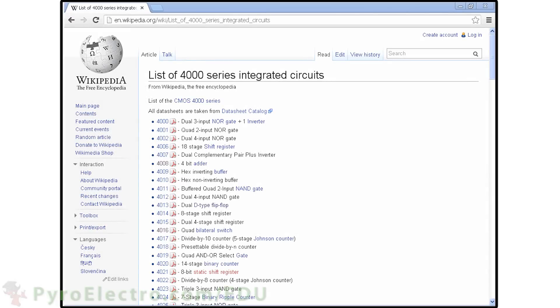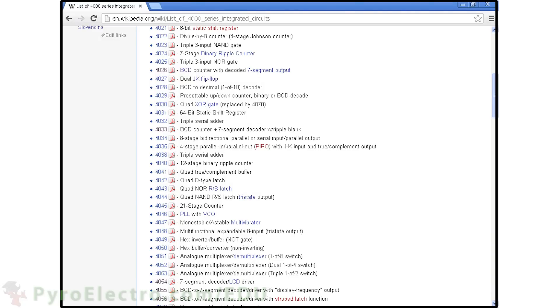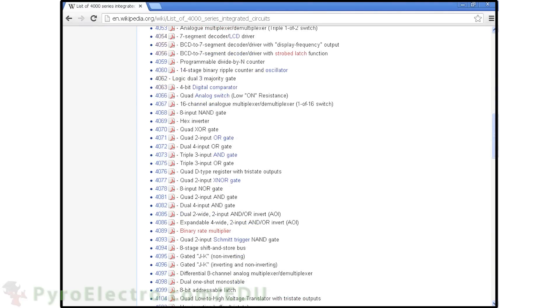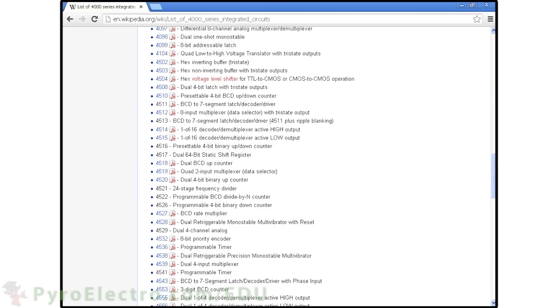The best place to look when you're searching for a specific 4000 series logic IC is on Wikipedia's list. There, it lists the different devices available with a short description and sometimes even a link to the datasheet. In general, 4000 series logic devices tend to be more specialized and less low level than their 7400 series brothers, which you can notice right away as you look through the list and see all kinds of different devices.